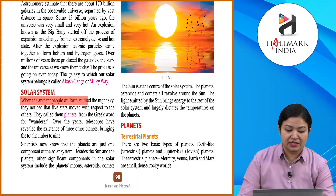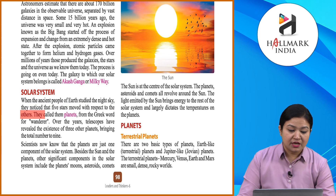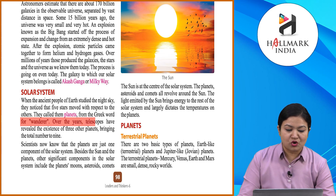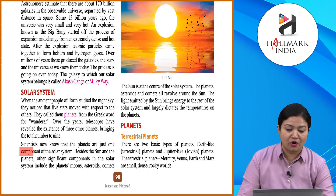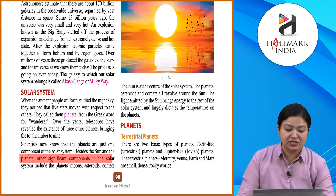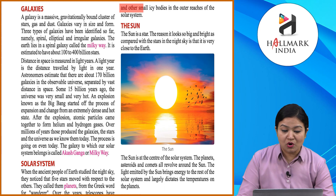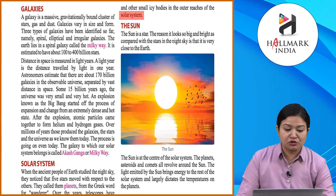When ancient people studied the night sky, they noticed that five stars moved with respect to the others. They called them planets, from the Greek word for wanderers. Over the years, telescopes revealed the existence of three other planets, bringing the total number to nine. Scientists now know that planets are just one component of the solar system, alongside the Sun, moons, asteroids, comets, and other small icy bodies in the outer reaches.